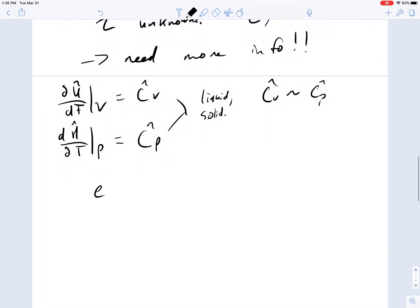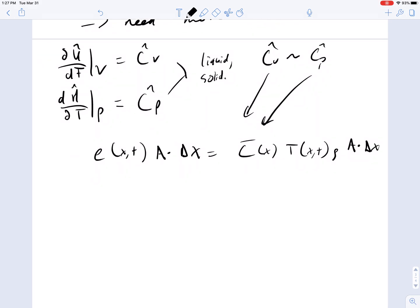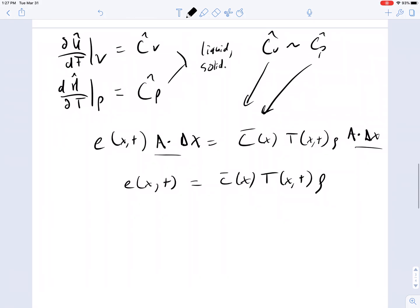Then we can replace this little e(x,t) times A times delta x with the equivalent in terms of the heat capacity. I'll just use c bar to denote that it could be either cp or cv. Let's say c can depend on x times the temperature(x,t), times the density, because this is per unit mass, times the volume there. So our little energy at x comma t is simply equal to the heat capacity times the temperature at that point times the density.